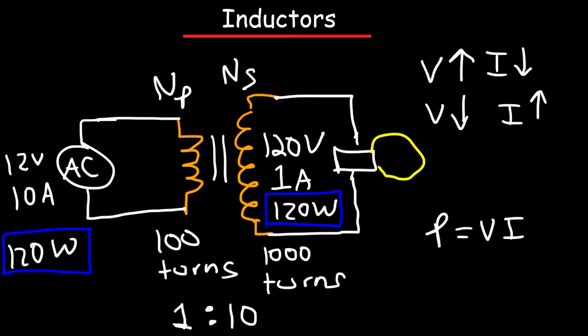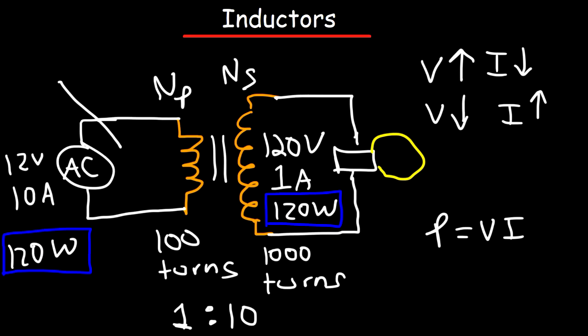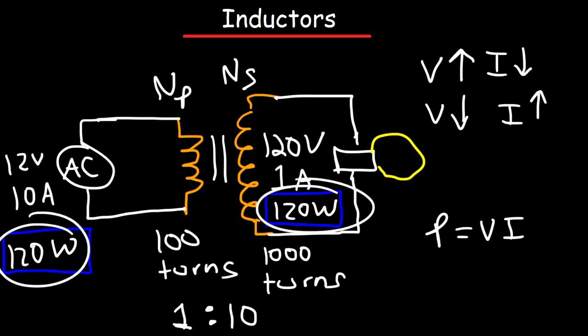the rate at which energy goes into the first circuit must equal the rate at which energy leaves the second circuit. And thus, as we can see in this example, ideally speaking, the power is the same.